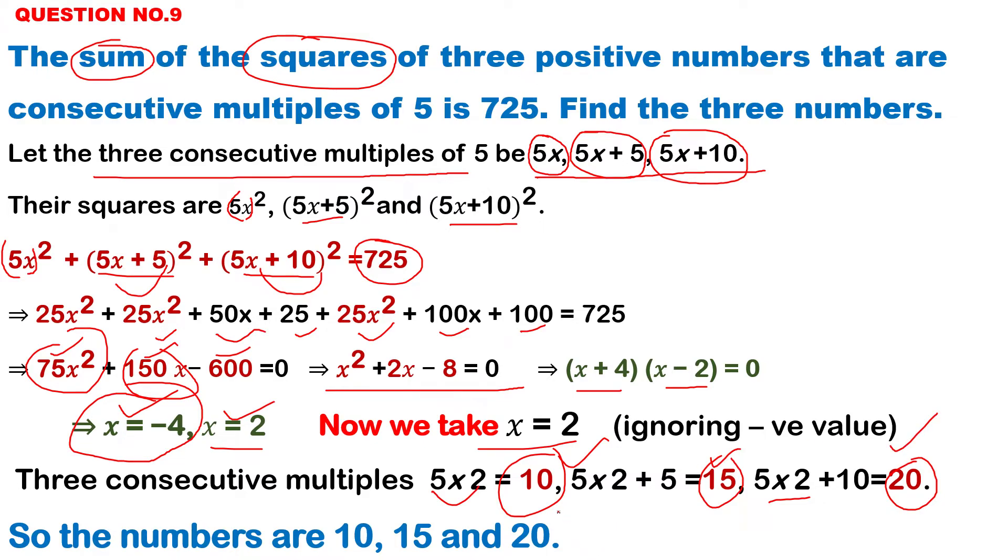How to check the question? Square of 10, 100. Square of 15, 225. And square of 20, 400. If the sum of squares of all these three numbers is 725, it means your answer is correct.